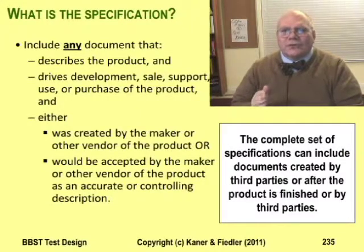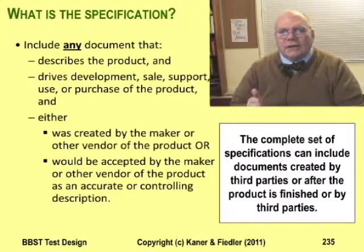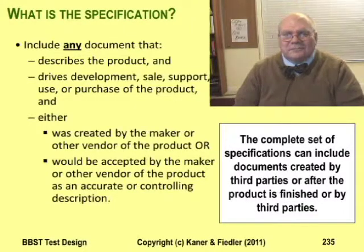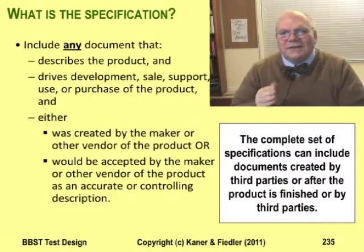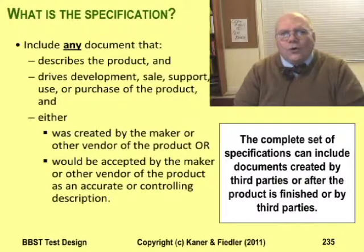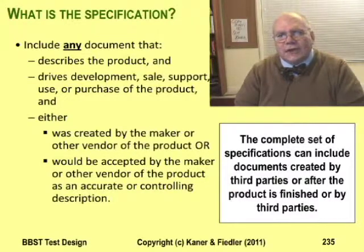So even when you have a contractual specification, the real specification includes a bunch of documents written at different times for different readers that say different things — sometimes even contradictory things. And in most cases, you don't have a specification that even pretends to be complete or legally enforceable. Any document that people would reasonably trust as a description of what your product can do, or should do, or how it does it, is part of the specification you might have to take into account. That might include advertisements, help files, user documentation, even books written by people with no connection to your company.